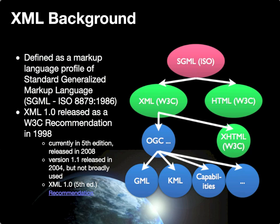XML 1.0 was released as a W3C recommendation in 1998 and is currently in its fifth edition. While version 1.1 was released in 2004, it remains not in broad use, and the fifth edition remains the most broadly used standard.